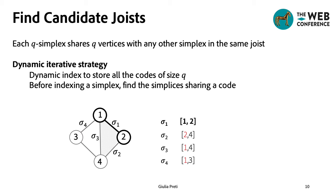However, as we can see from the figure, not all of them belong to the same joist. In fact, the subset formed by sigma1, sigma2, and sigma3 form the joists of the dotted triangle, while sigma4 does not form any joist with sigma1.